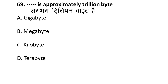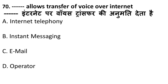Next question: dash is approximately equal to a trillion bytes. Gigabyte stands for billion bytes, megabyte for million bytes, kilobyte for thousand bytes, and terabyte stands for trillion bytes. So the correct answer is terabyte.